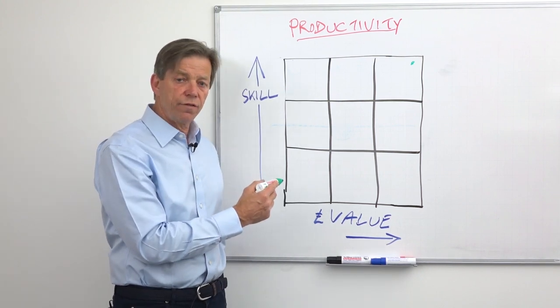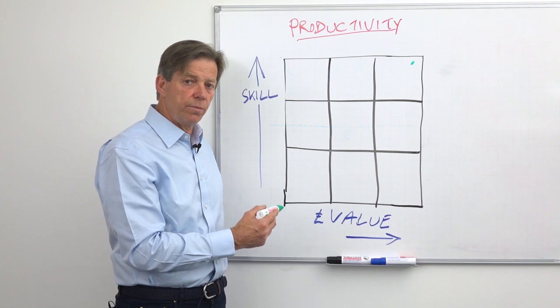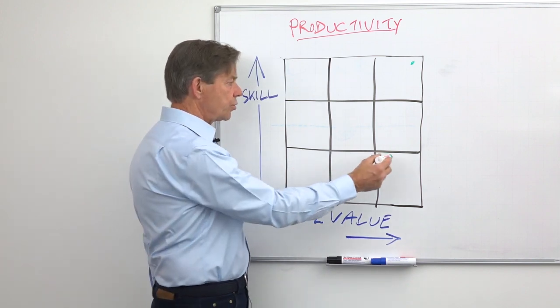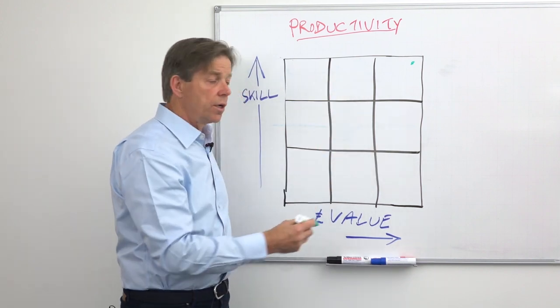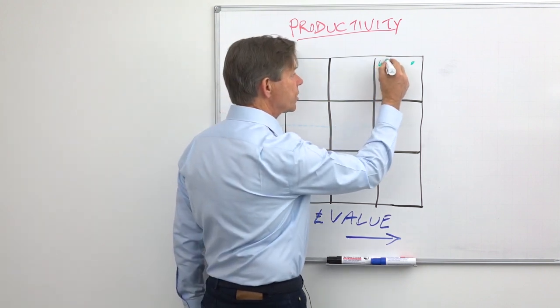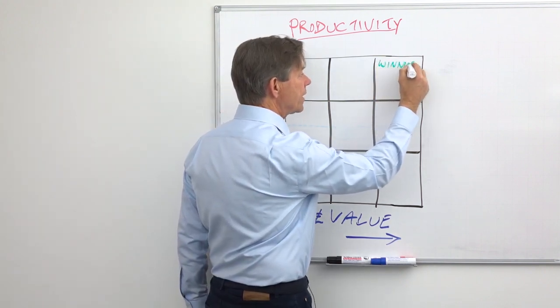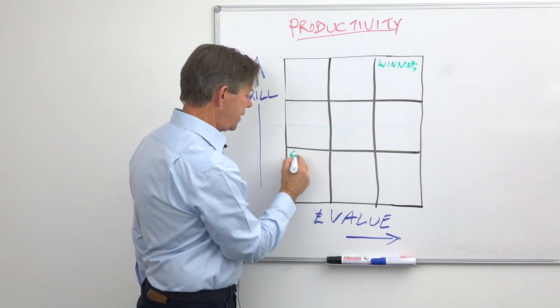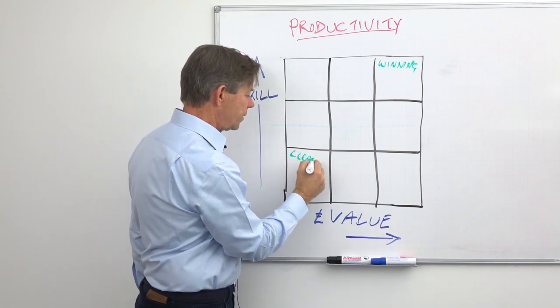So the first step is to identify all the tasks that are done within the business and drop them into any one of these grids. So winning new business would sit up here, whereas for example cleaning might sit down the bottom left hand corner.